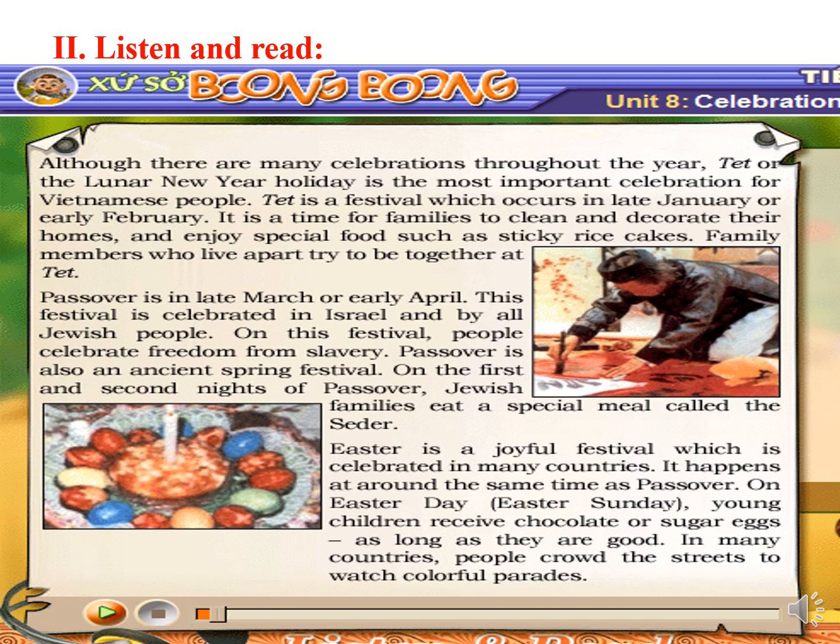Family members who live apart try to be together at Tet. Passover is in late March or early April. This festival is celebrated in Israel and by all Jewish people. On this festival, people celebrate freedom from slavery. Passover is also an ancient spring festival. On the first and second nights of Passover, Jewish families eat a special meal called the Seder. Easter is a joyful festival which is celebrated in many countries. It happens at around the same time as Passover. On Easter Sunday, young children receive chocolate or sugar eggs as long as they're good. In many countries, people crowd the streets to watch colorful parades.